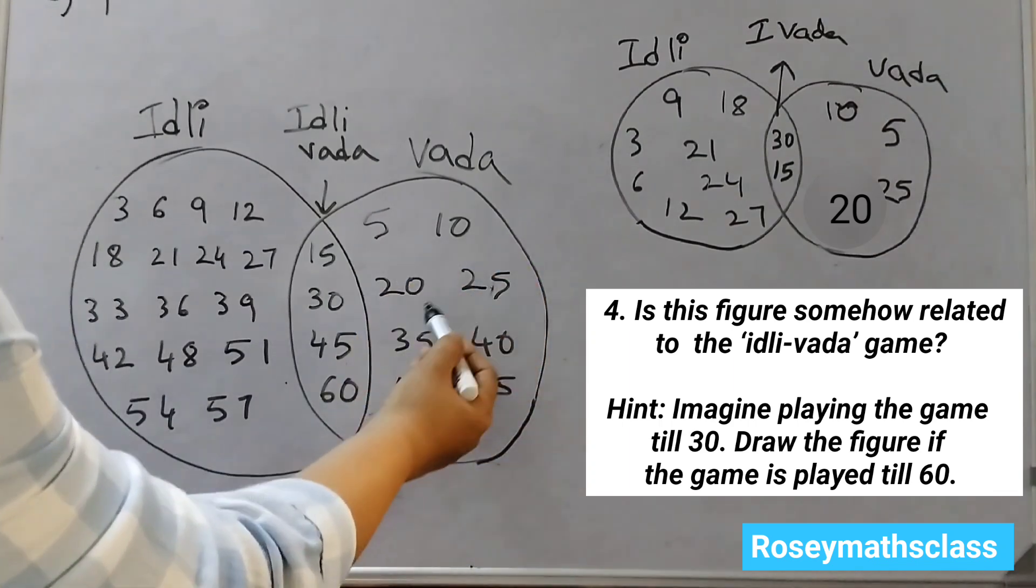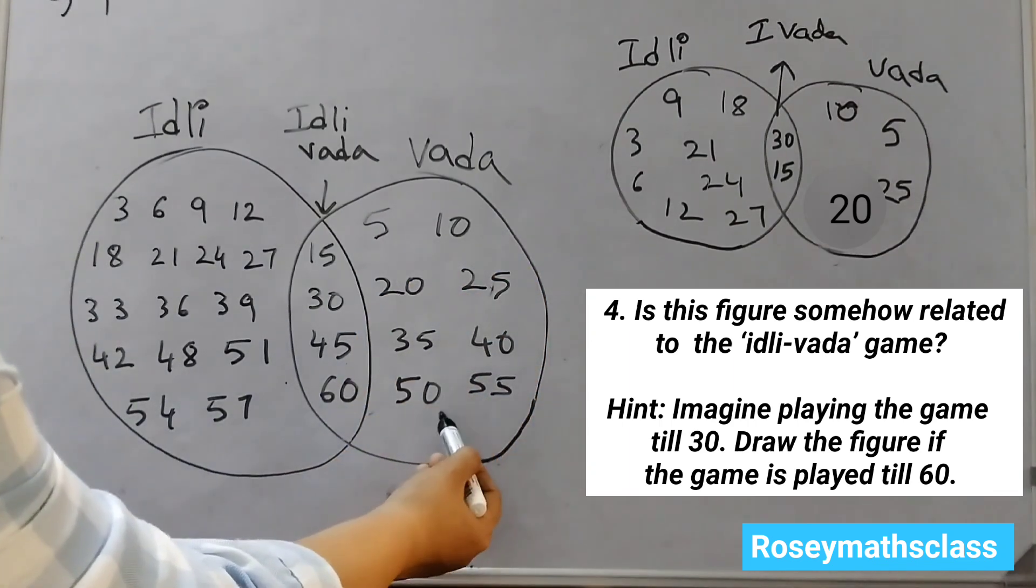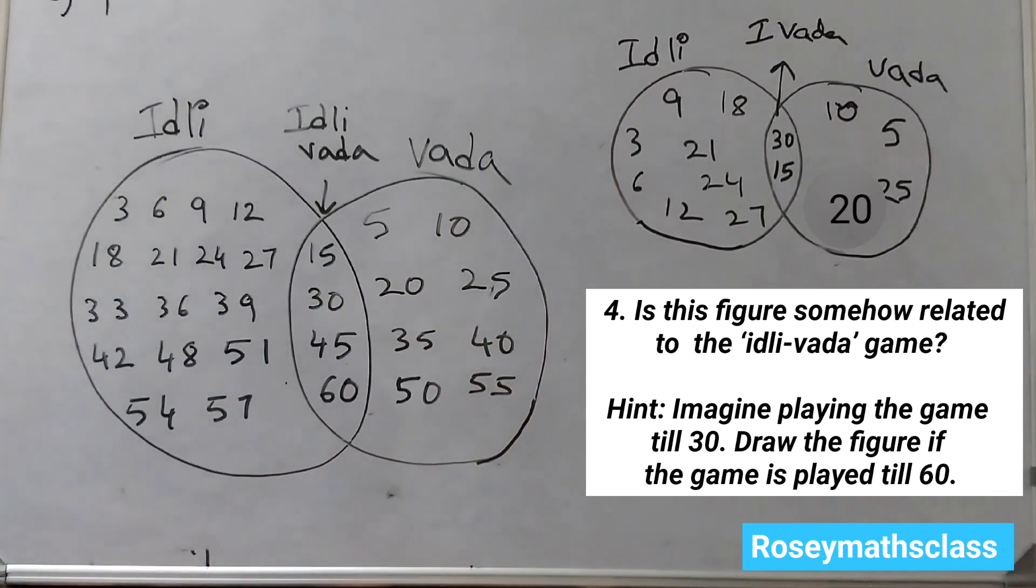So for all these numbers—5, 10, 20, 25, 35, 40, 50, 55—the children would say Vada. And for these numbers—15, 30, 45, 60—the children would say Idli Vada.